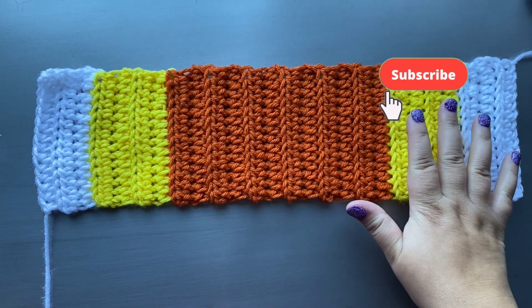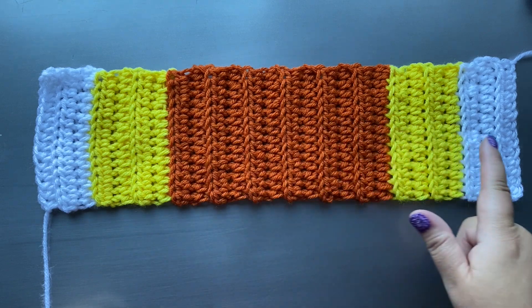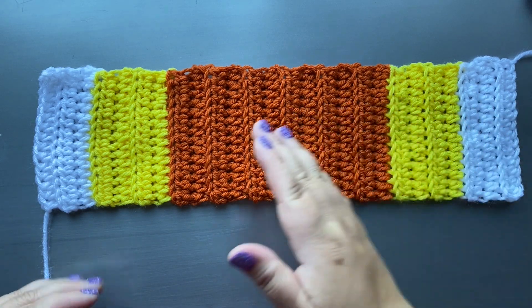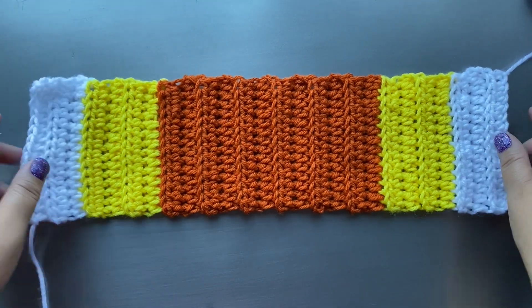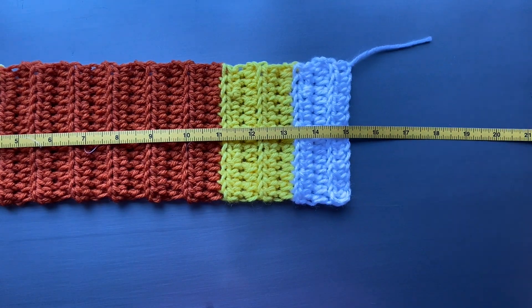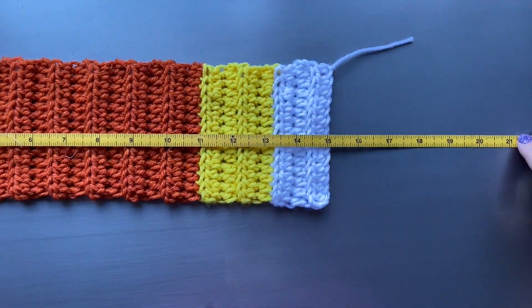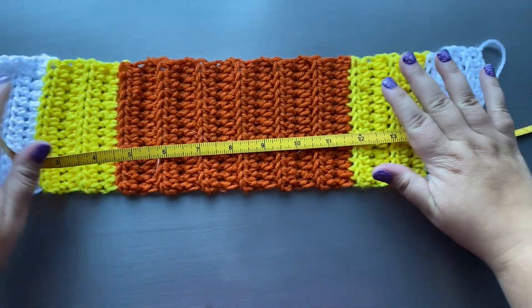This headband is crocheted in a flat rectangle, working sideways, growing the width in rows. To make it smaller, crochet less rows. To make it bigger, crochet more rows. This rectangle measures at 15 inches, but when it's stretched, it stretches to 19 inches, fitting a child size head.